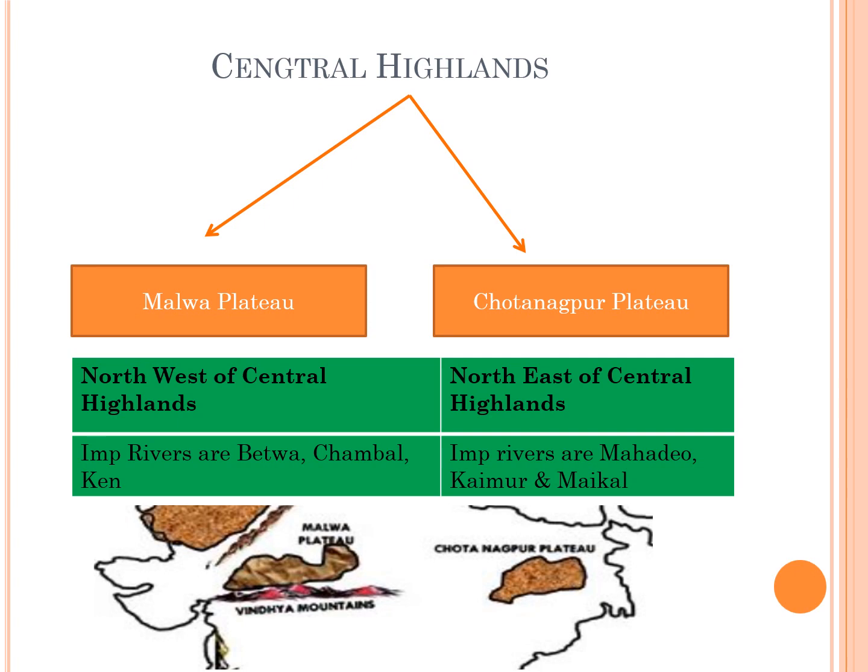The Malwa Plateau lies to the north of the Narmada River and is spread across the states of Rajasthan, Madhya Pradesh and Gujarat. The slope of this region is indicated by the direction in which the rivers flow, i.e. from south-west to north-east. The average elevation of this area is about 500 meters. The important rivers in the Malwa Plateau are Betwa, Chambal and Ken rivers.